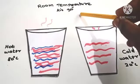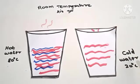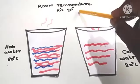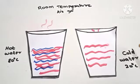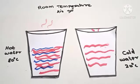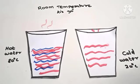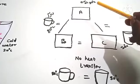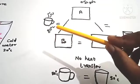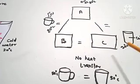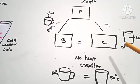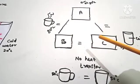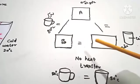Now consider system A and system C. System A is air at room temperature 30 degrees Celsius. System B is a glass filled with hot coffee at 80 degrees Celsius. System C is a glass filled with cold coffee at 20 degrees Celsius. System A and B are thermally in equilibrium, and system B and C are thermally in equilibrium.